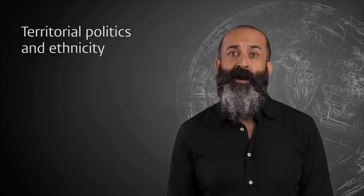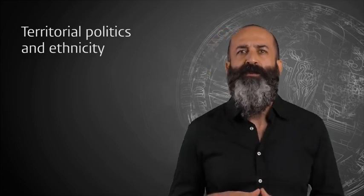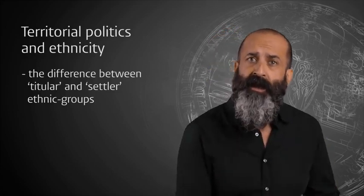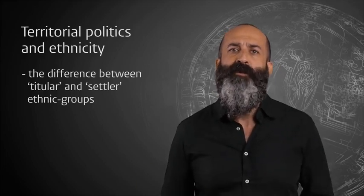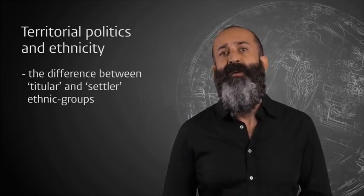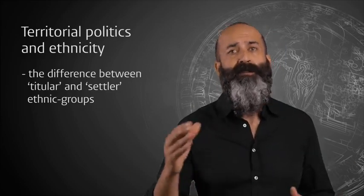An important benchmark to help navigate the maze of territorial politics and ethnicity in Ethiopia is the difference between titular and settler ethnic groups. The language and culture of ethnic groups who are historically indigenous to the territory are recognized under the system of ethnic federalism. Put simply, they hold title to the territory. Tensions have grown as regional states amend their constitutions or adopt new constitutions affirming this right.